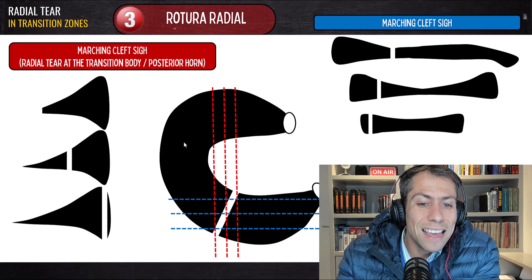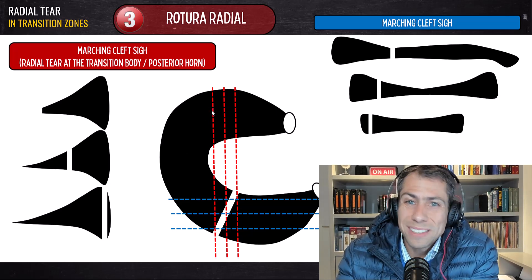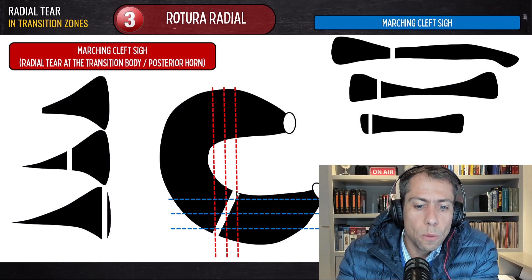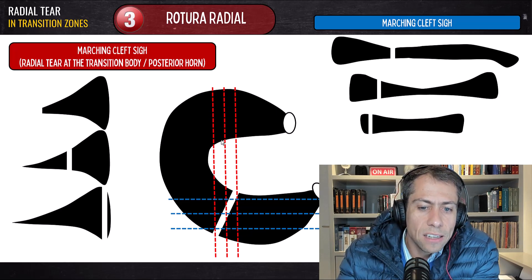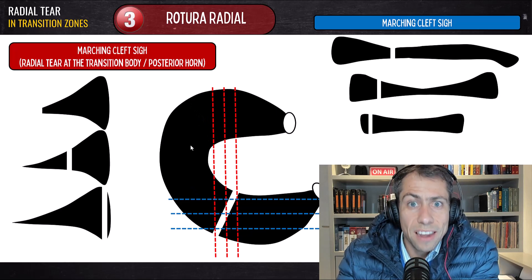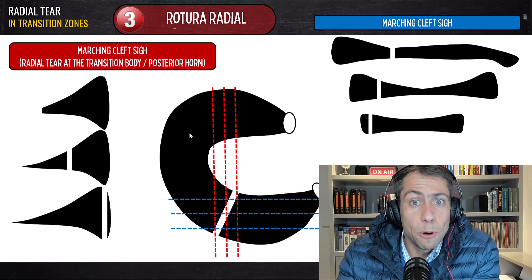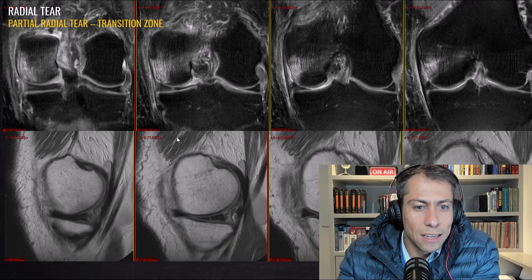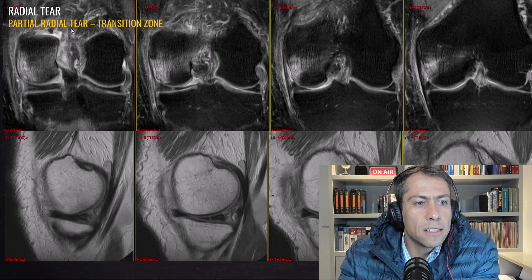In cases like that, the axial plane helps a lot, because in the axial plane we can see that the tear is linear, not curved — it's not a parrot beak tear. We should double-check the axial plane in cases like this.